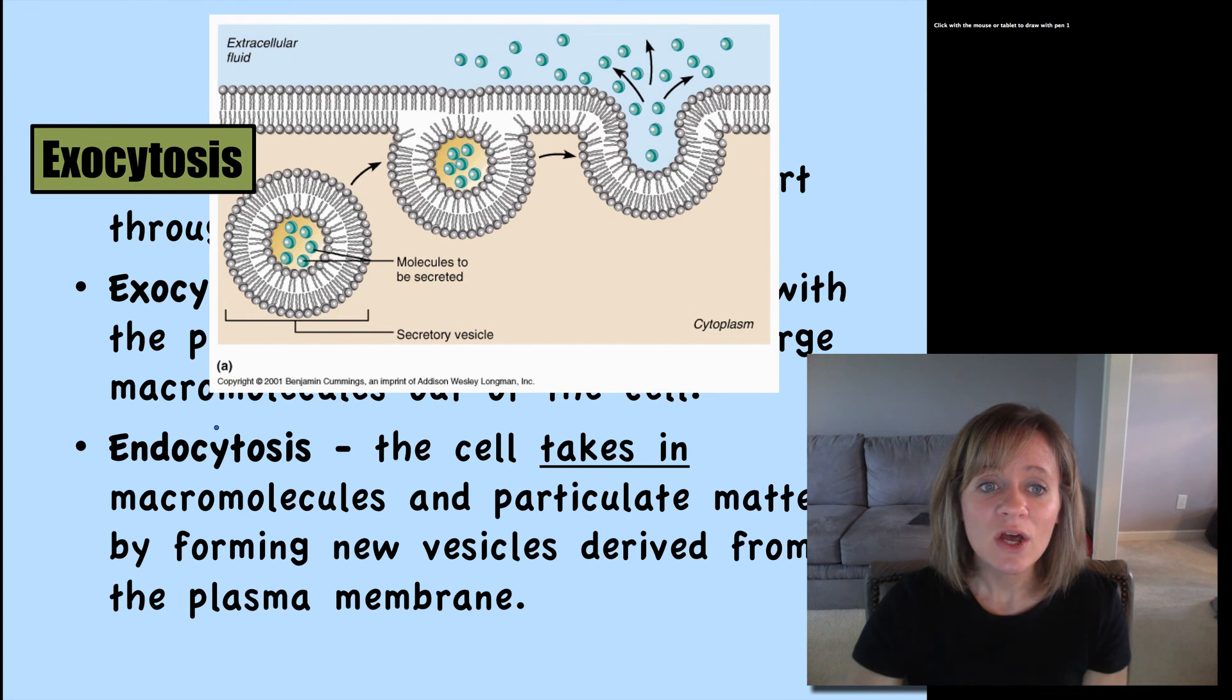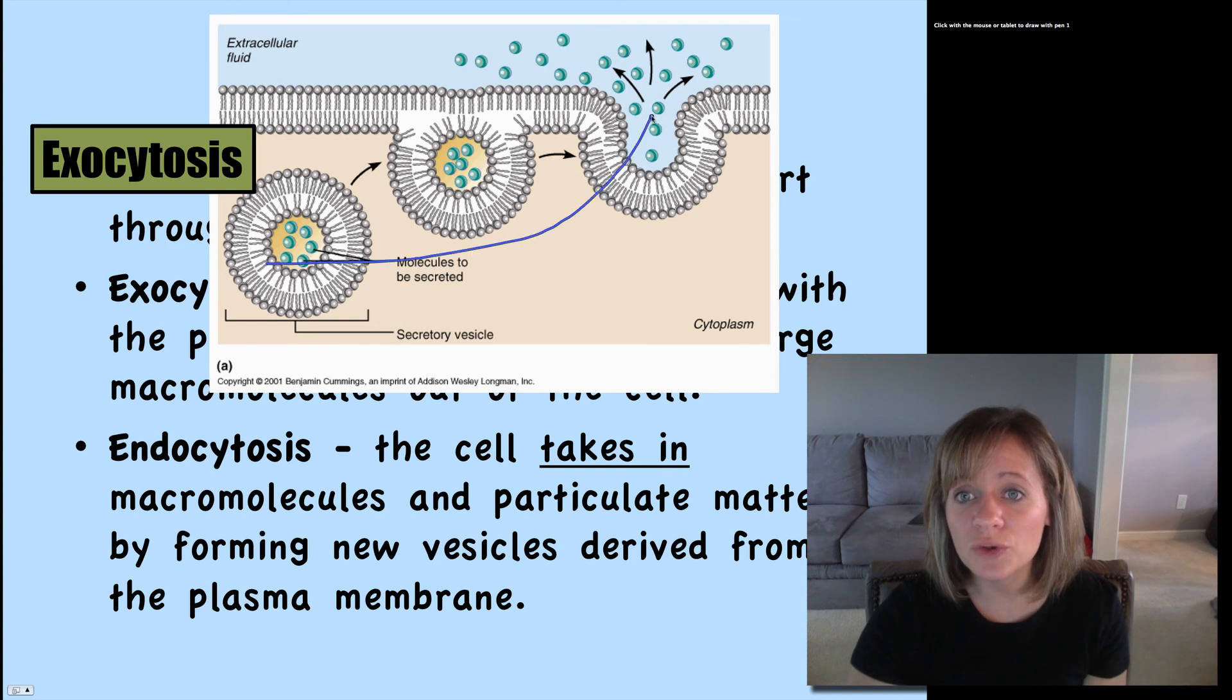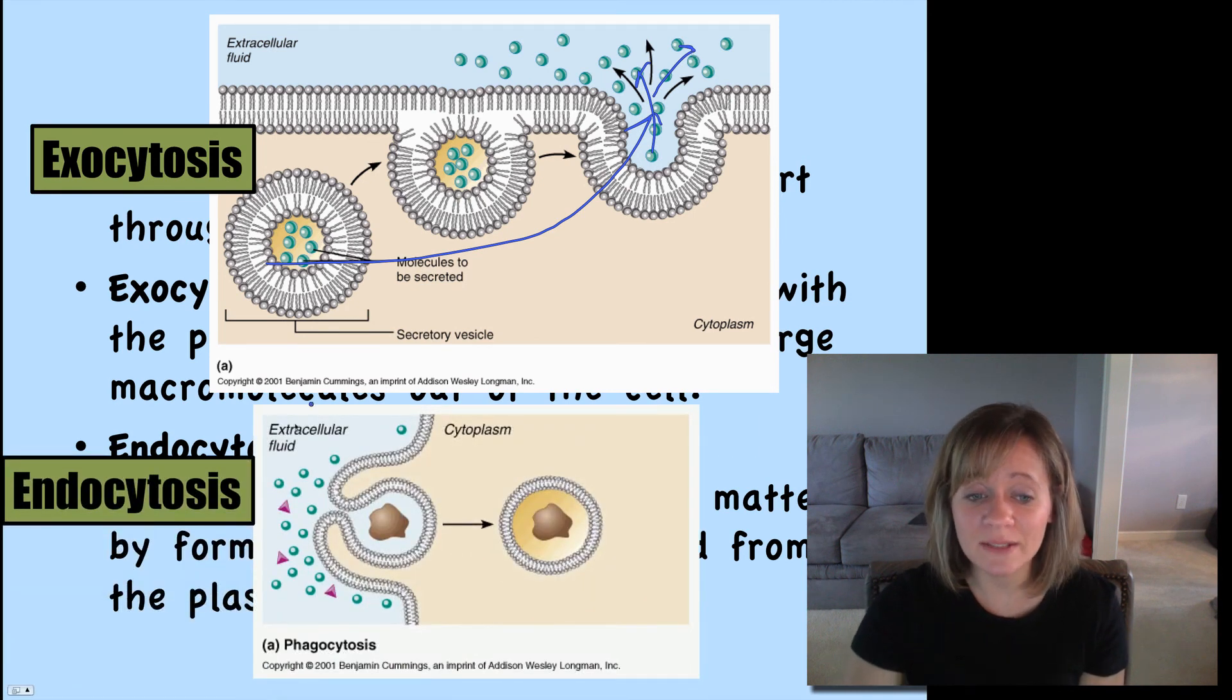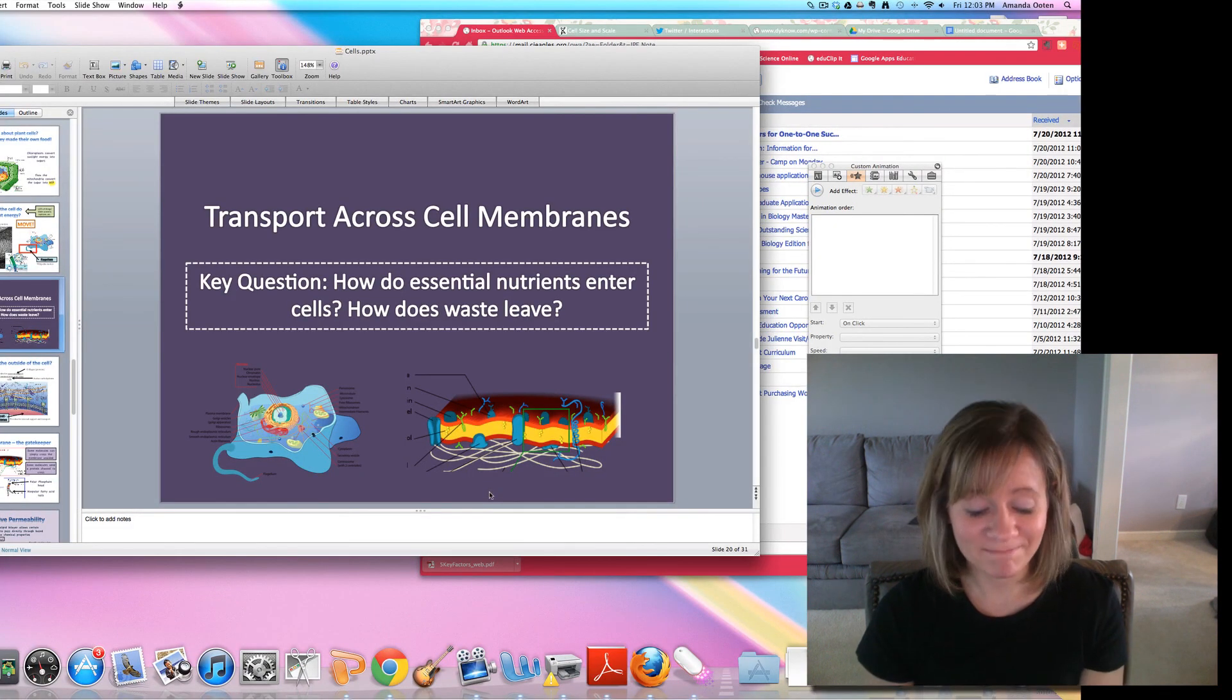So exocytosis, here's some waste that we need to get rid of. So we're going to make a vesicle that is actually just going to fuse with the existing plasma membrane and then secrete that waste outside. Endocytosis is the opposite. We've got some large molecules to bring in. So we're actually just going to pinch in that cell membrane and form an internal vesicle. And that does it for this video on transport. Thank you.